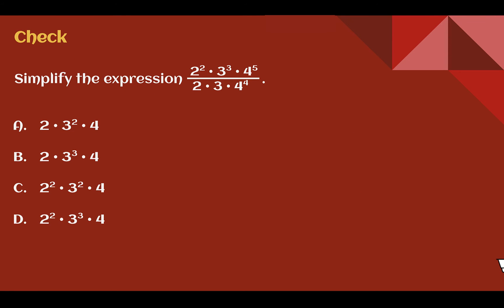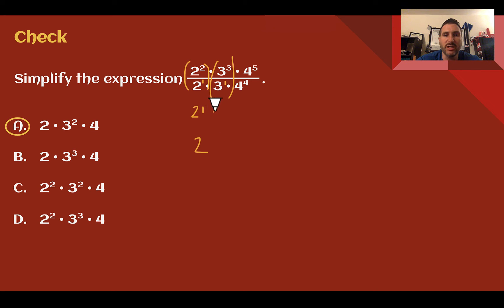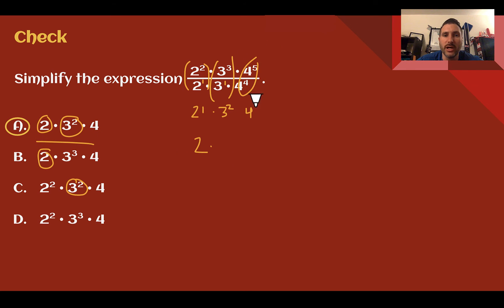Check your understanding: simplify the given expression and choose the answer that is equivalent. Pause the video now and complete the check. You should have said A. Dividing: 2 to the 2nd and 2 to the 1st gives 2 to the 1st, which is just 2. 3 to the 3rd divided by 3 to the 1st would be 3 squared — and they're leaving it as that. 5 and 4 give an exponent of 1, which is just 4 for that base. A is the only choice that has all three correct.